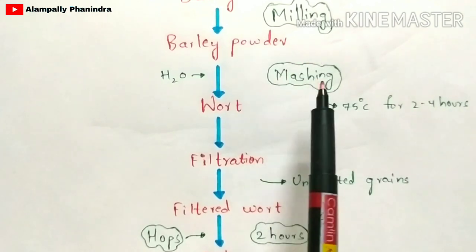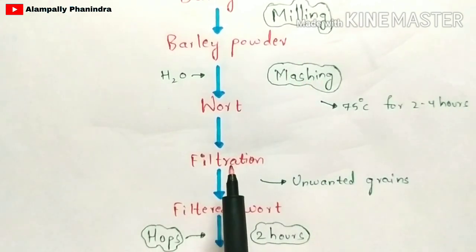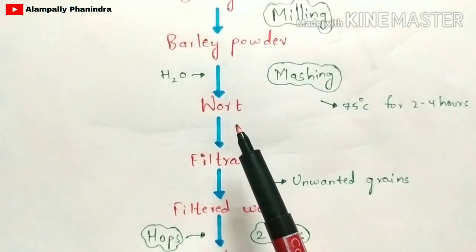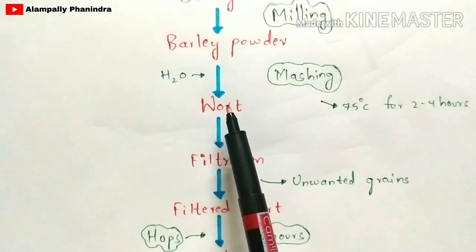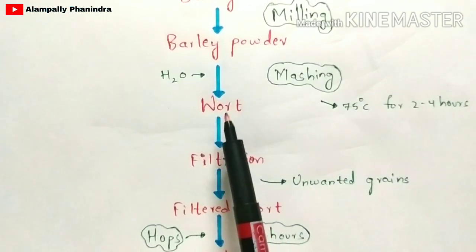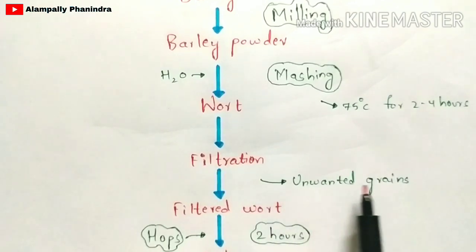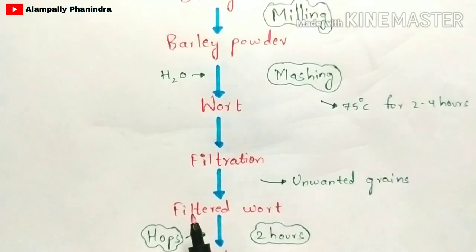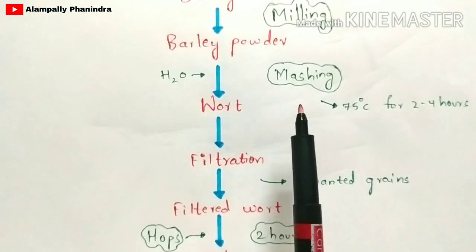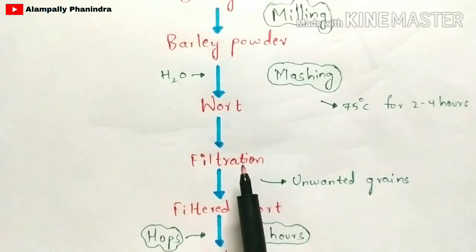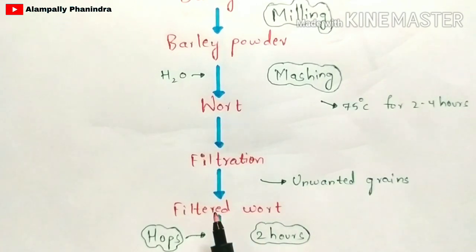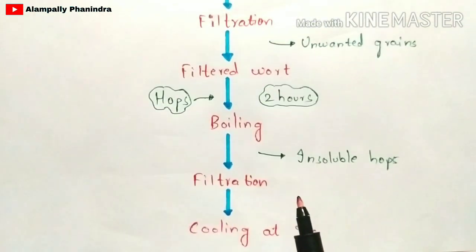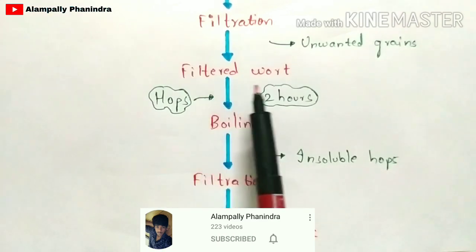The next step is filtration. In the wort, unwanted grains of barley are also present. Filtration is the process where these unwanted barley grains are removed from the wort, such that filtered wort is obtained. So the steps so far are: milling, then mashing, then filtration to produce filtered wort.